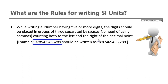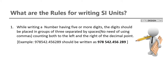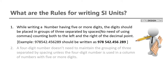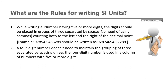From the decimal point, you should count the numbers in groups of three. The second rule: a four-digit number doesn't need to maintain the grouping of three separated by spacing.